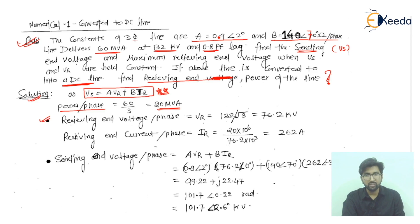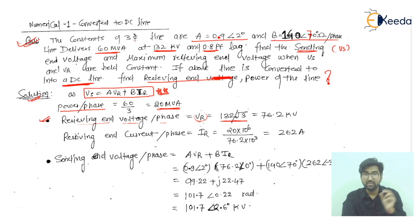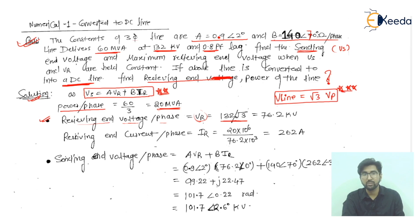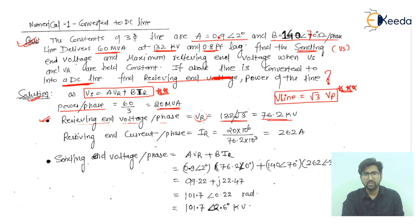The receiving end voltage per phase, VR, is 132 divided by root 3, because 132 kV is the line-to-line voltage. Since V_line = √3 × V_phase, we divide by root 3 to get the per-phase value, which gives us 76.2 kV.